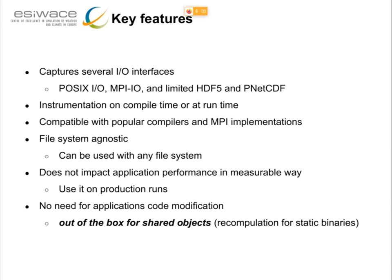Darshan is not linked to any file system because the application itself is instrumented via symbol overloading during the linking time. If the application is using a shared object (.so), the shared object symbol is going to be overloaded during the loading phase into memory, and then the Darshan version of the IO call will be triggered first, with Darshan calling afterwards the original IO function. It's a convenient way to squeeze in. If the binary is static, then there is no option for Darshan to overload the symbol during the linking phase because all libraries are within the static binary — meaning we need to recompile, which for a large scientific application may not be cheap.